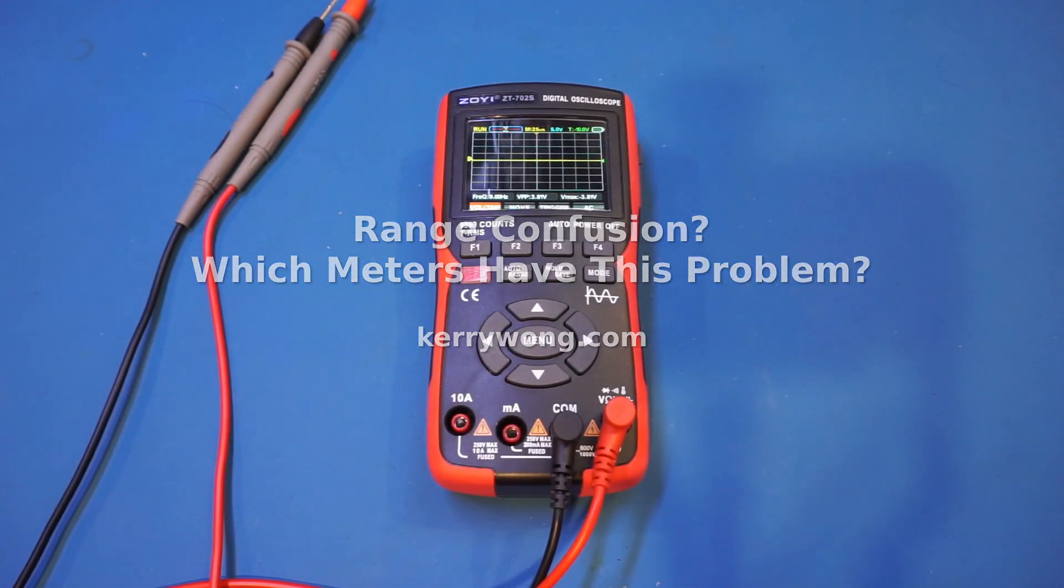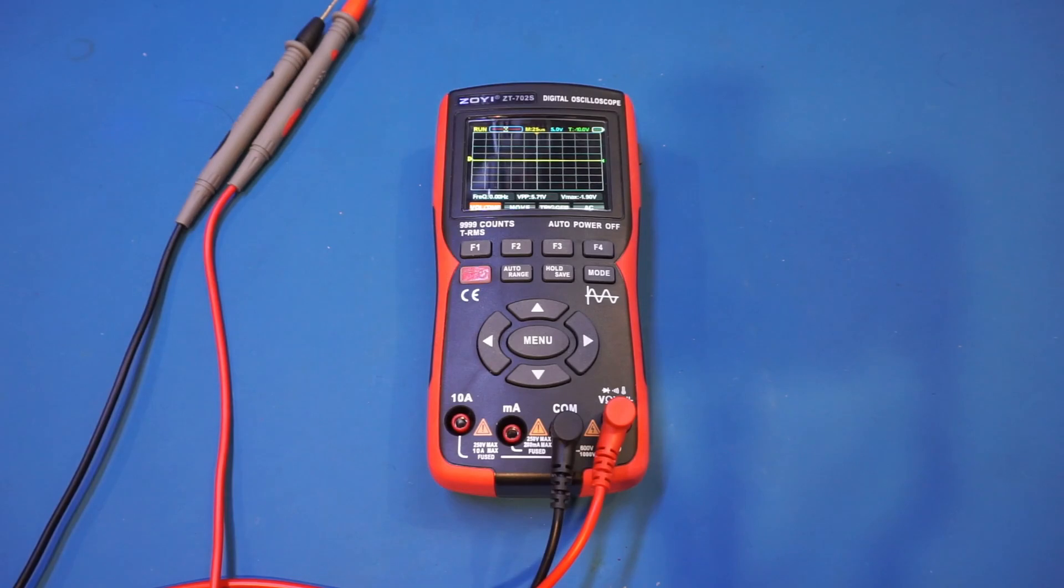In a previous video, when I reviewed the Zotec Zoe ZT702S, we found some issues with the current range readings. The meter was giving wrong readouts when the current range setting was not matching the input jack's specified ranges. As a quick refresher, let me remind you of the issue I'm talking about here.